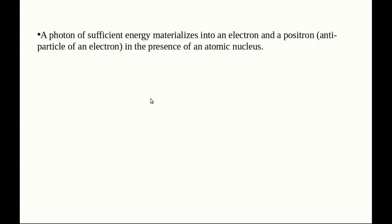The definition of pair production is that a photon of sufficient energy materializes into an electron and a positron in the presence of an atomic nucleus. One photon of particular energy materializes, but there should be the presence of an atomic nucleus — it cannot occur in a vacuum or empty space.